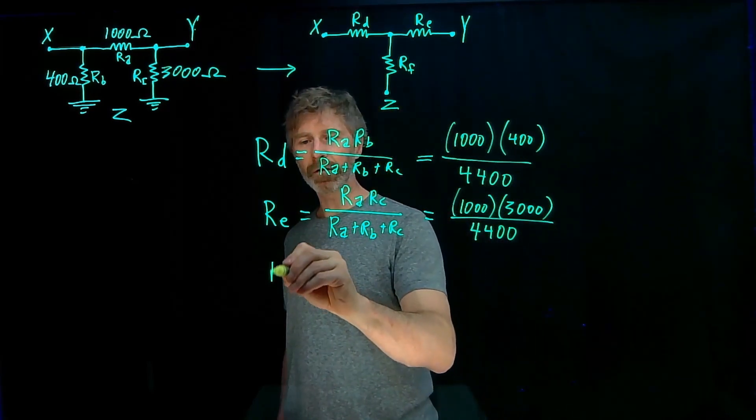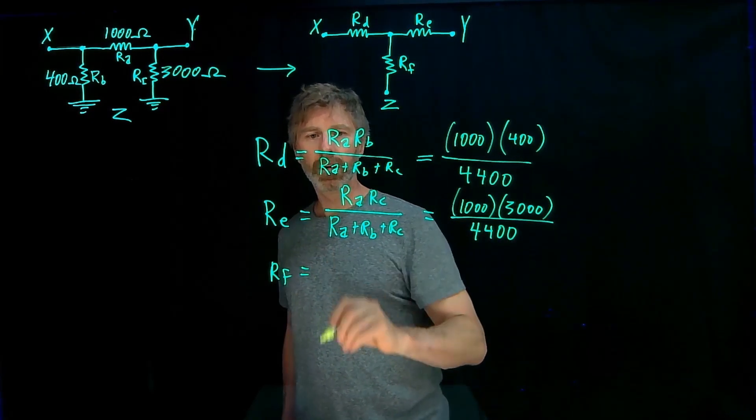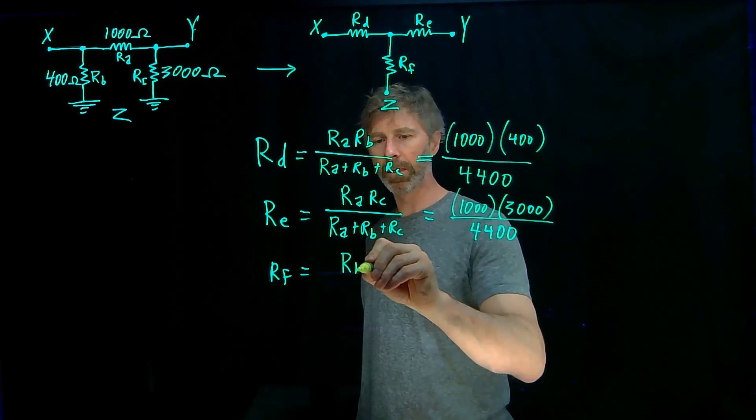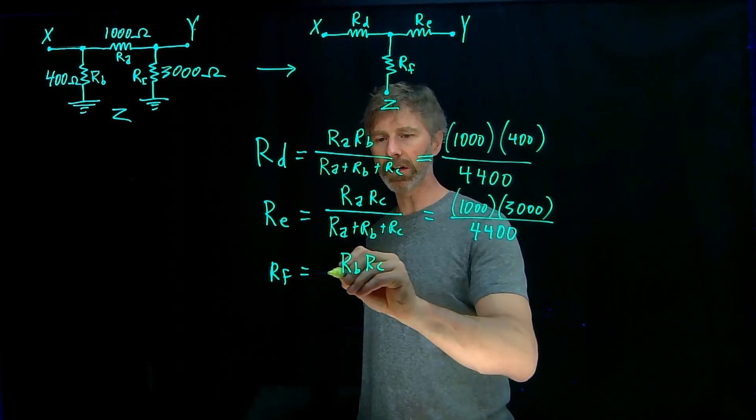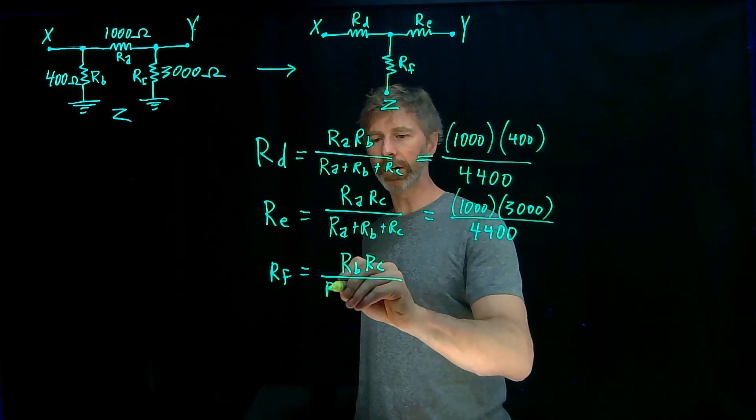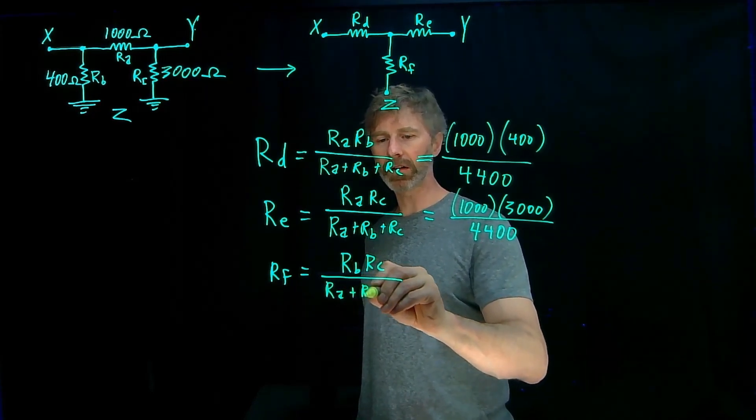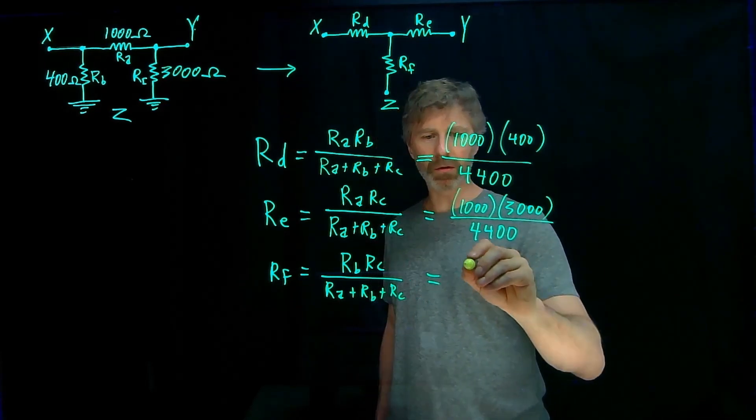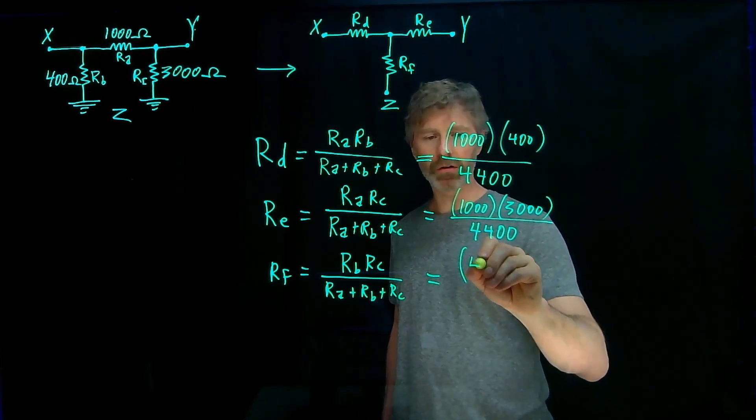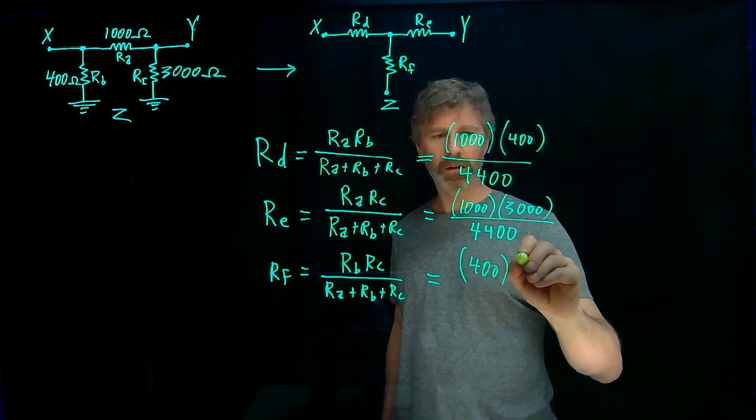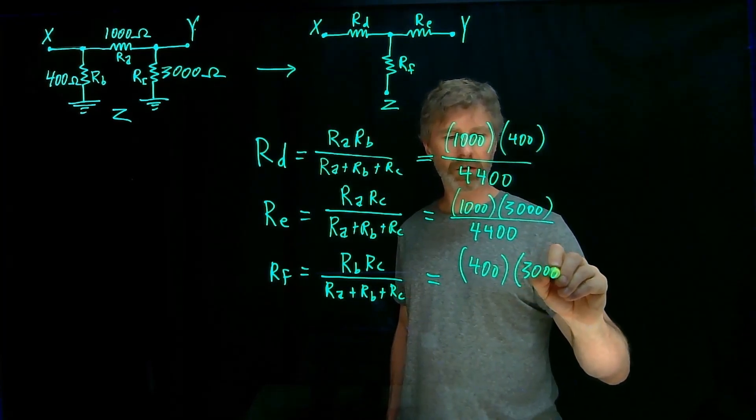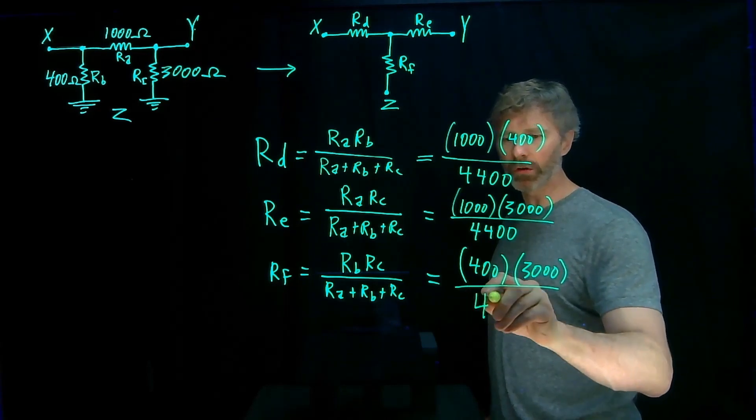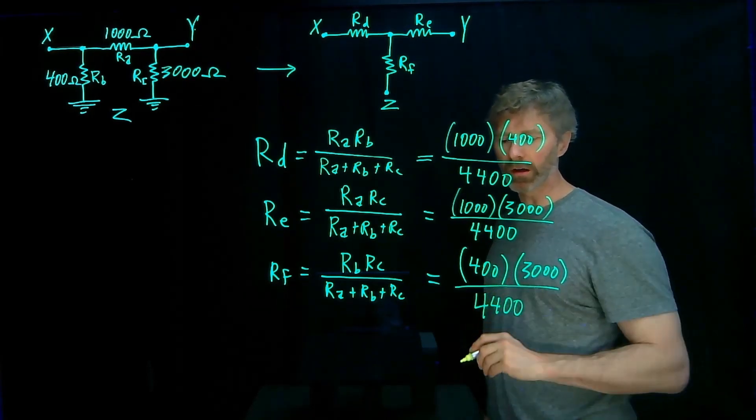And finally Rf is equal to Rb times Rc over that same denominator Ra plus Rb plus Rc. So that's equal to Rb is 400 times Rc of 3000, all divided by that 4400 ohm denominator.